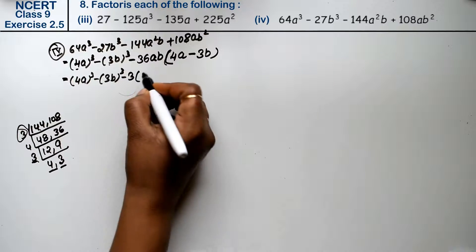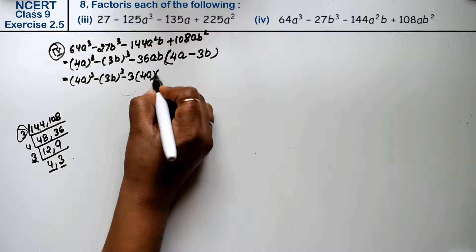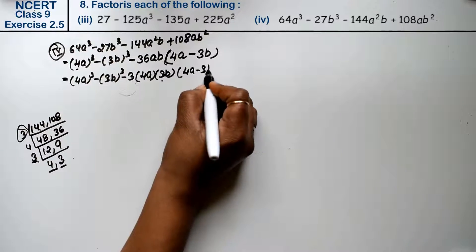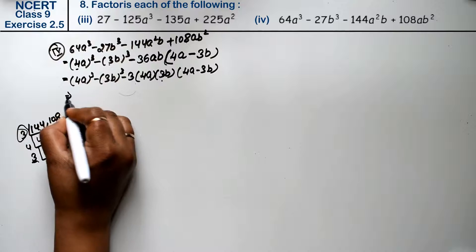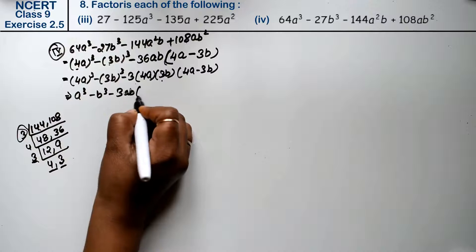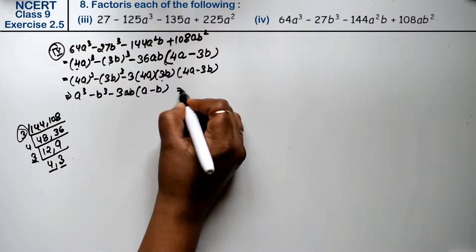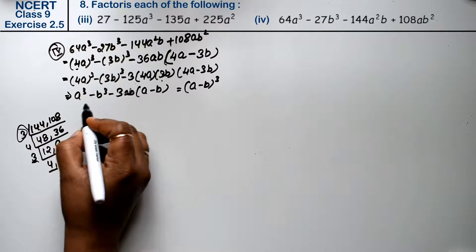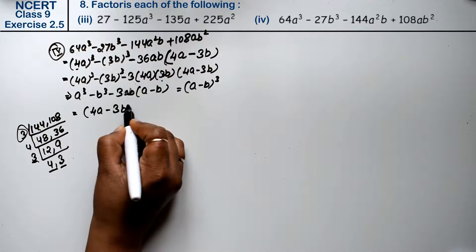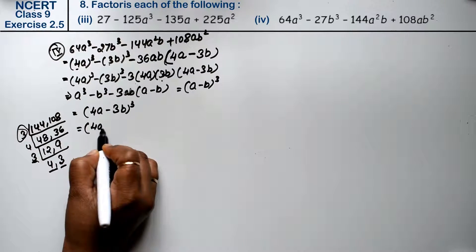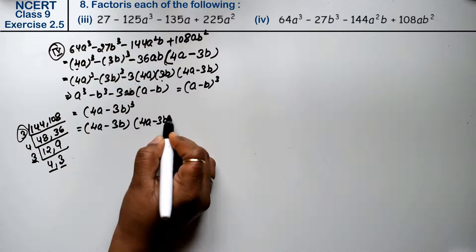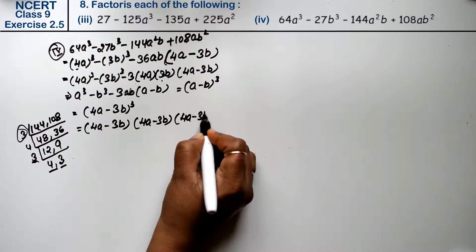So this gives us: minus 3 into 4a into 3b, and if I open it, then (4a minus 3b). Now see — which formula is a cube minus b cube minus 3ab into (a minus b)? This formula is (a minus b) cube. So a is 4a and b is 3b, giving (4a minus 3b) whole cube. So (4a minus 3b) and (4a minus 3b) is the answer.